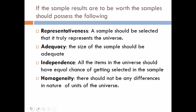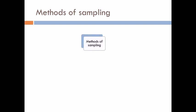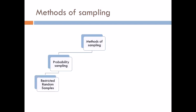Those are the qualities that a sample should possess. Now let's move on to different methods of sampling. Sampling methods are usually divided into two: one is called the probability sampling method, and the other is non-probability sampling methods. Under probability sampling methods, you have restricted random samples and unrestricted random samples, which we will discuss later in detail.